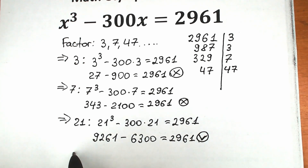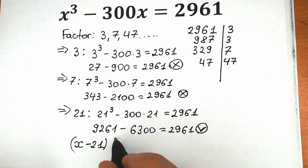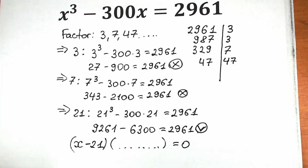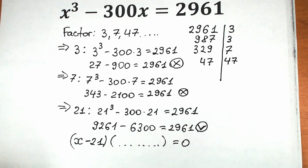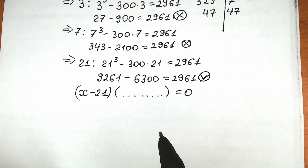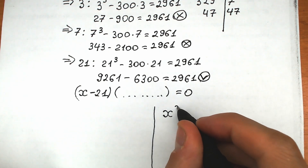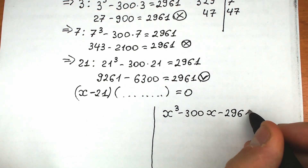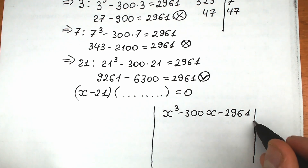So we can say that x minus 21 is the first parenthesis we need to factor the full expression. But we need to find another parenthesis, and of course this is all equal to zero. So let's divide the original expression by x minus 21.